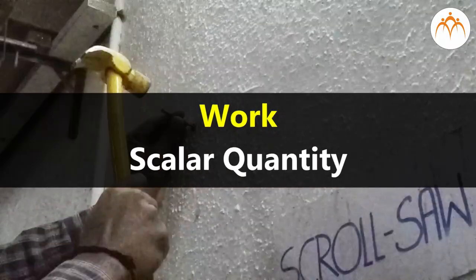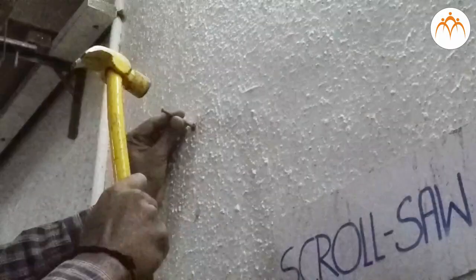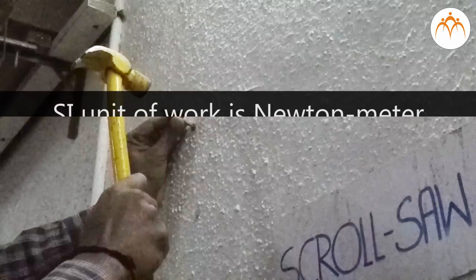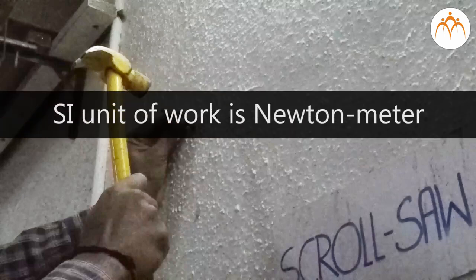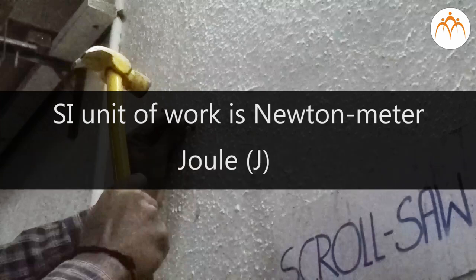Work is a scalar quantity and its units are force multiplied by length. Therefore, the SI unit of work is Newton meter. This combination of units is so frequent that it has been given a name of its own, the joule, that is J.